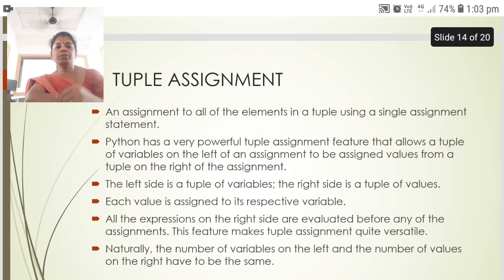The next is tuple assignment. An assignment to all of the elements in a tuple using a single assignment statement. Python has a very powerful tuple assignment feature that allows a tuple of variables on the left of an assignment to be assigned values from the right of the assignment. The left side is a tuple of variables. The right side is a tuple of values. Each value is assigned to its respective variable. All the expressions on the right side are evaluated before any of the assignments. This feature makes tuple assignment quite versatile. Naturally, the number of variables on the left and number of values on the right have to be same.